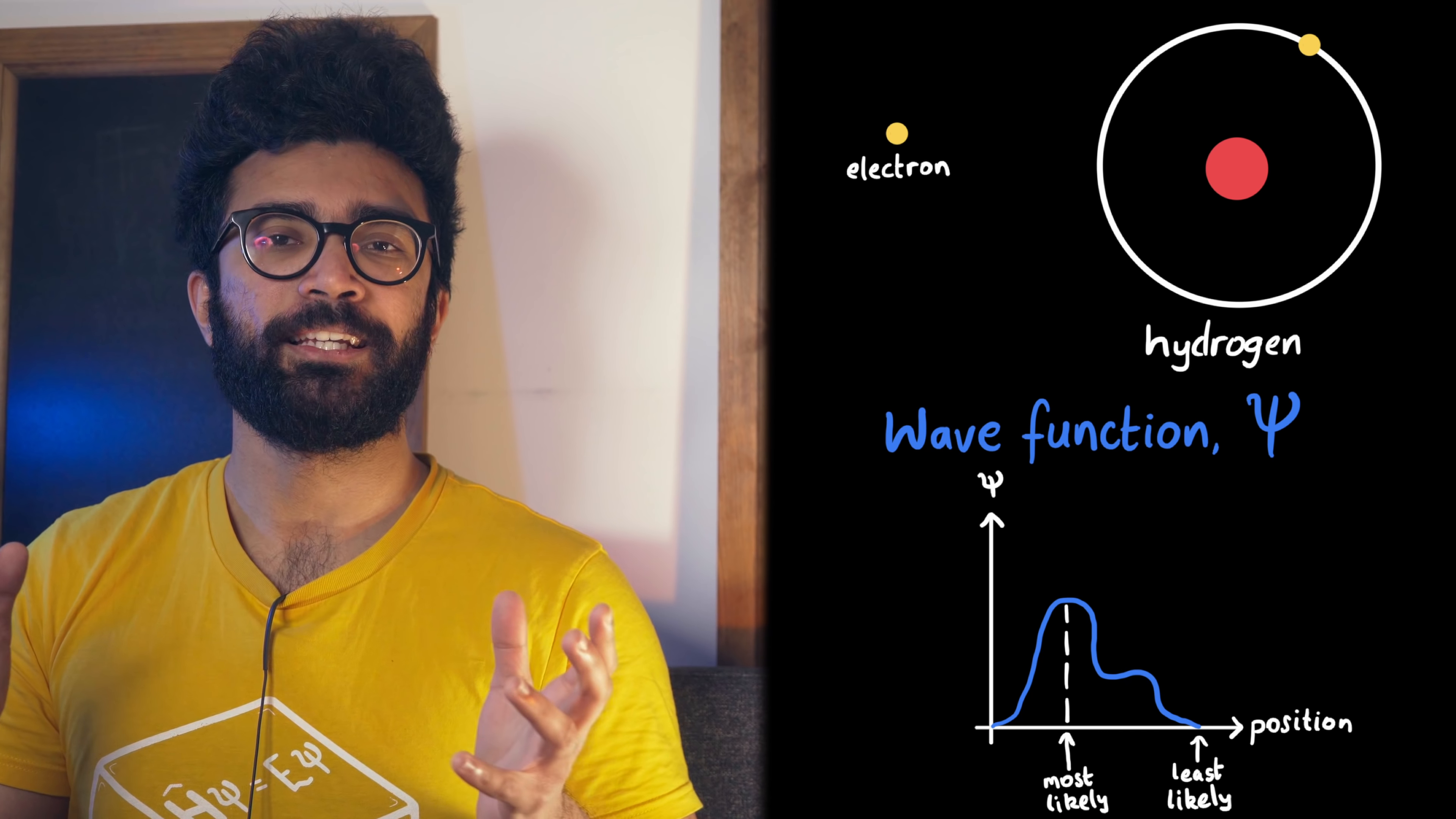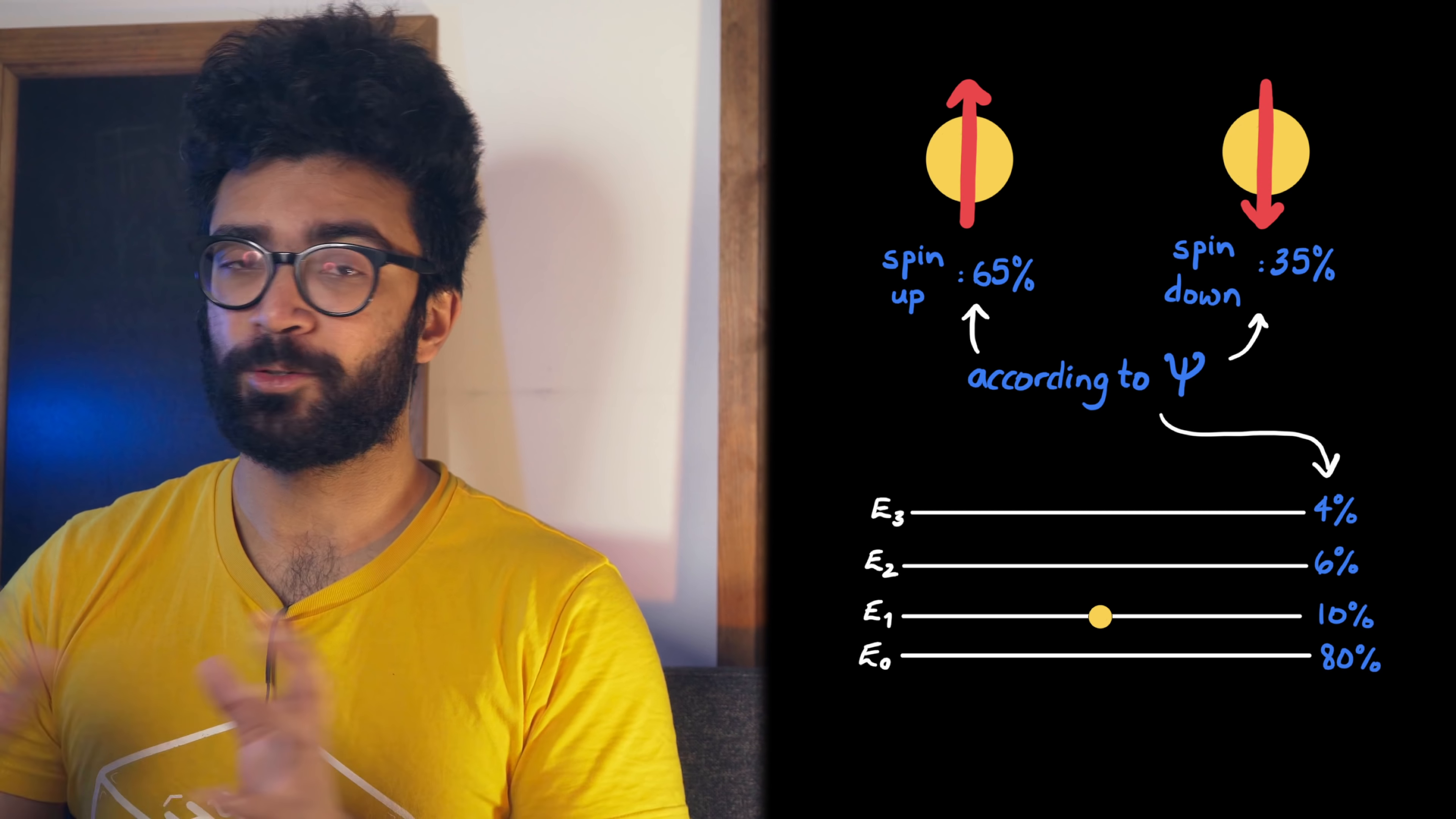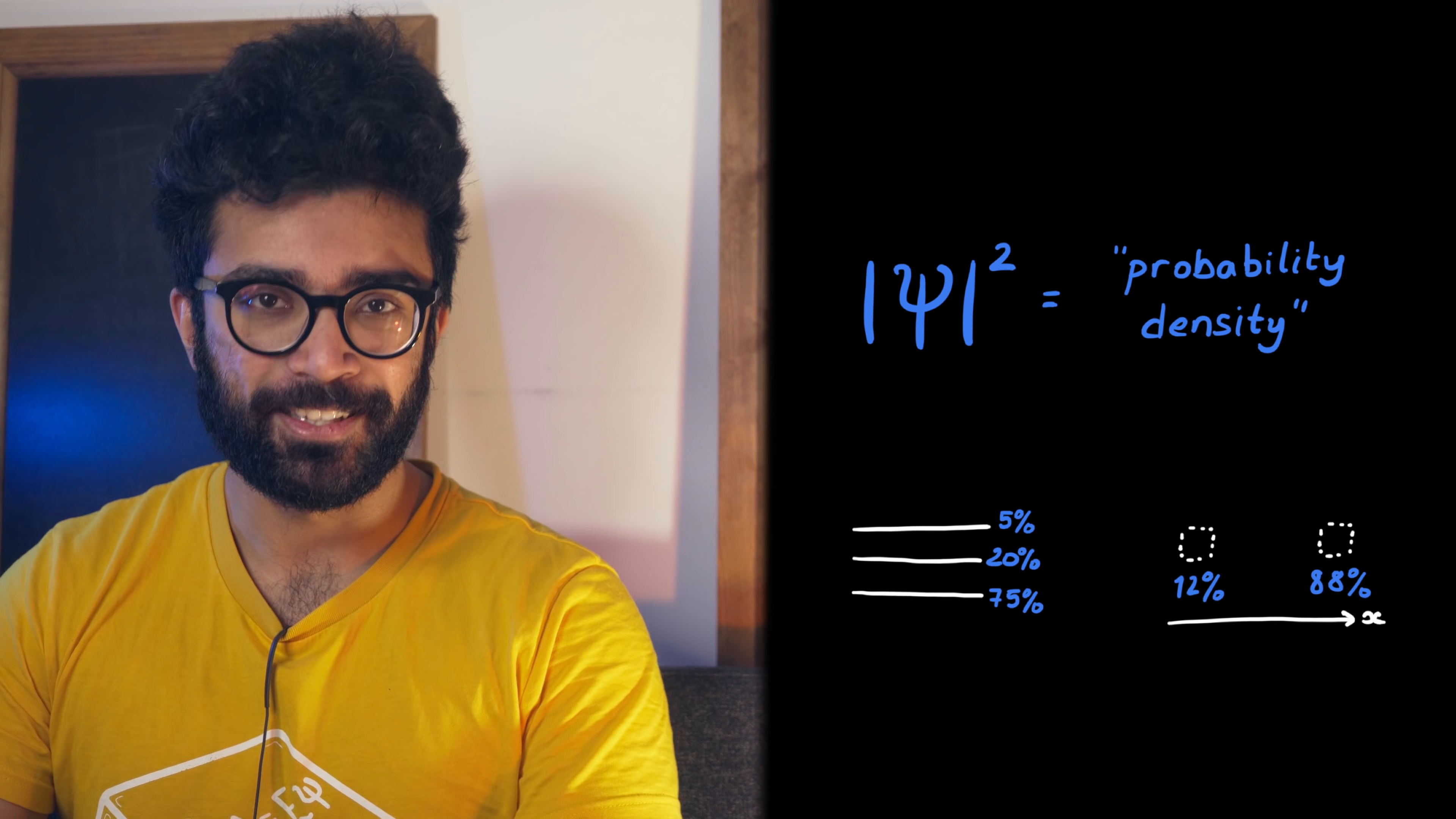But the wave function also contains information about stuff like what spin our particle could be found with, or what energy level it's likely to be found in. And the wave function is directly related to these probabilities. If we take the wave function and we square it, then this gives us the probabilities of finding our particles in each of the possible energy levels or regions of space, or whatever measurement we're considering. If you want a more in-depth discussion of quantum wave functions, by the way, then check out this video I made a little while ago.